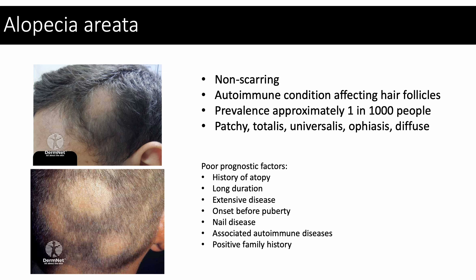Alopecia areata is an autoimmune condition which affects the hair follicles, resulting in non-scarring alopecia. Any hair-bearing skin can be involved, but it most commonly affects the scalp or beard area and less frequently the eyebrows and eyelashes. In patchy type, there are one or more round to oval patches of hair loss. In alopecia totalis, there is hair loss across the entire scalp including eyebrows and eyelashes. In diffuse alopecia areata, there is sudden thinning all over the scalp. In ophiasis alopecia, hair loss occurs in a band along the sides and back of the head.